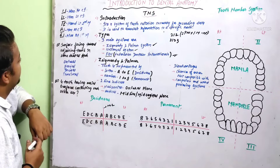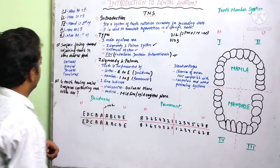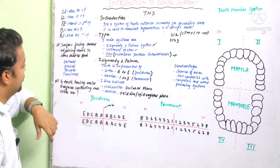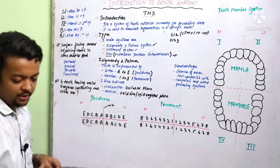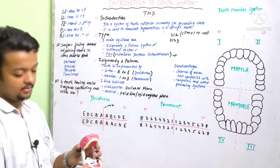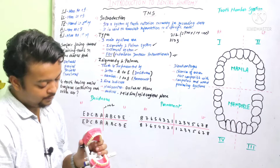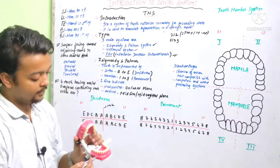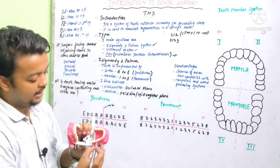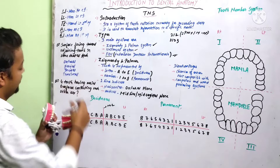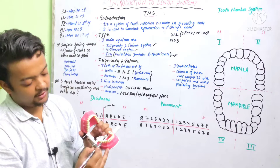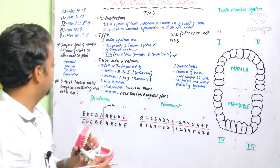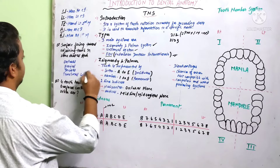Now a question: what is the surface facing towards the adjoining tooth in the same dental arch — occlusal, facial, incisal, or proximal? For a first molar we have mesial, distal, buccal, lingual, and occlusal. For the second molar, similarly. Looking at both teeth, the distal of the first molar faces the mesial of the second molar. Surfaces facing towards the adjoining tooth in the same dental arch are called proximal surfaces. The answer is proximal.